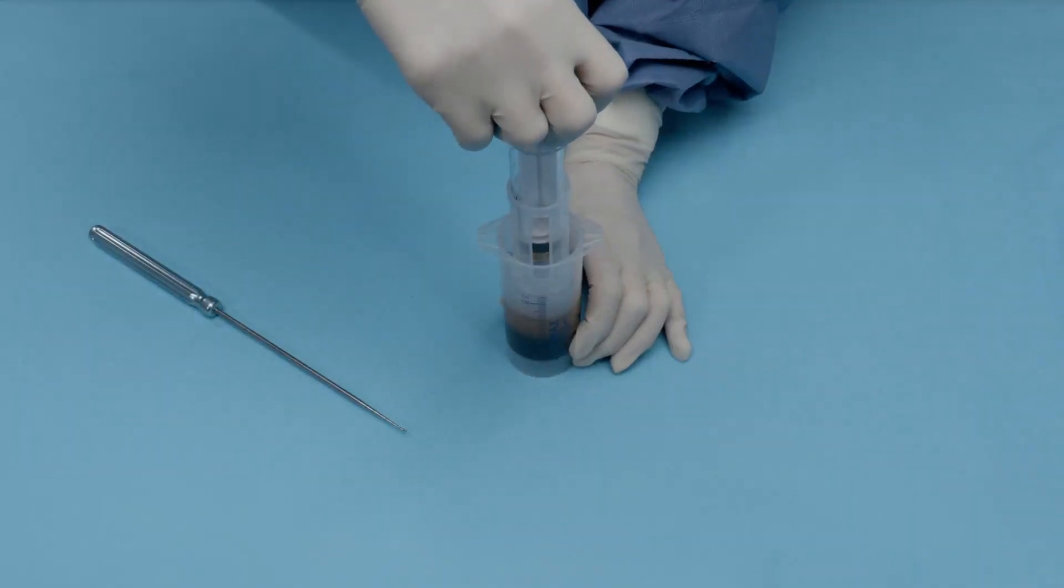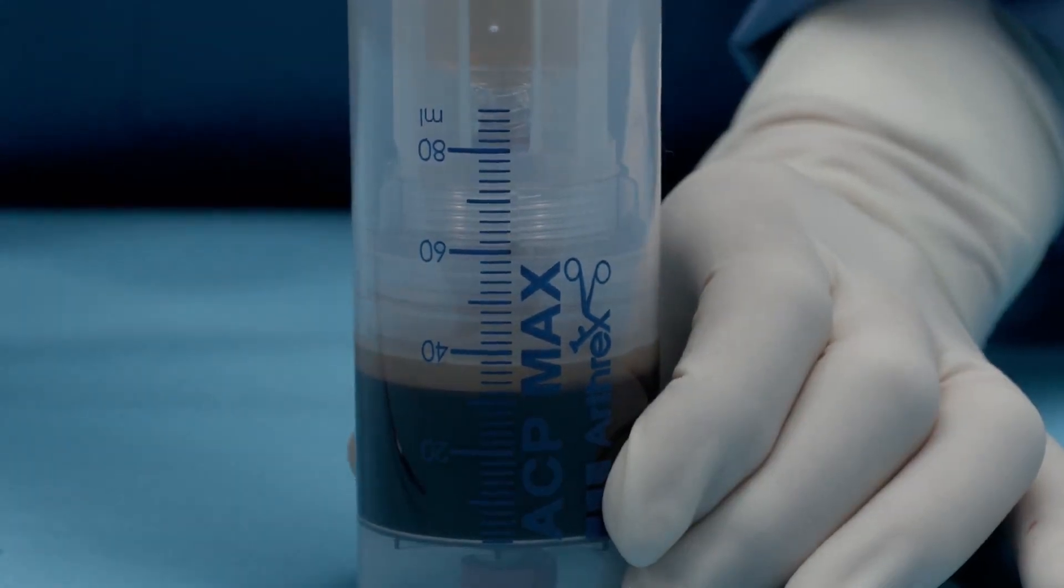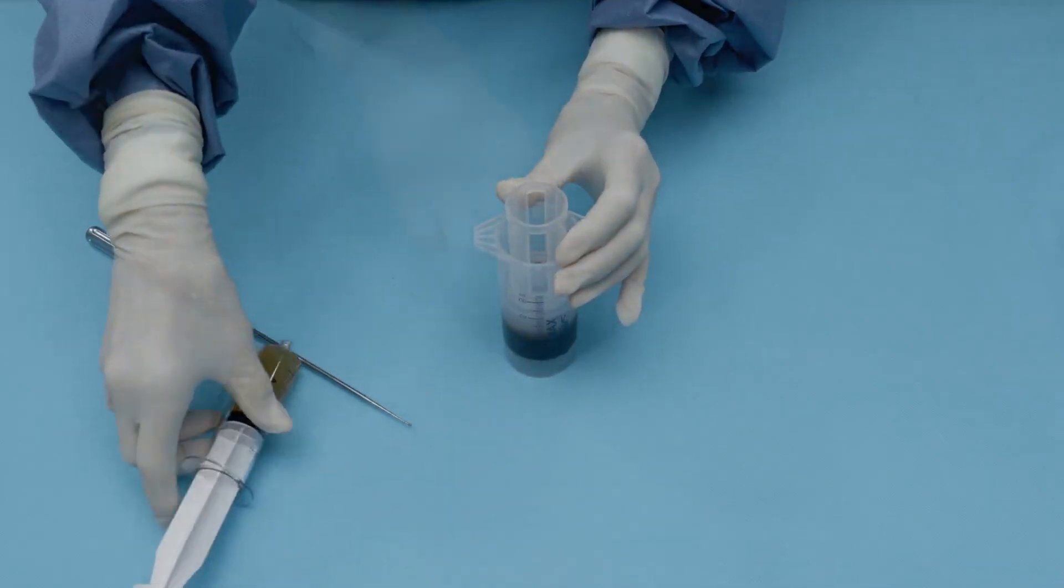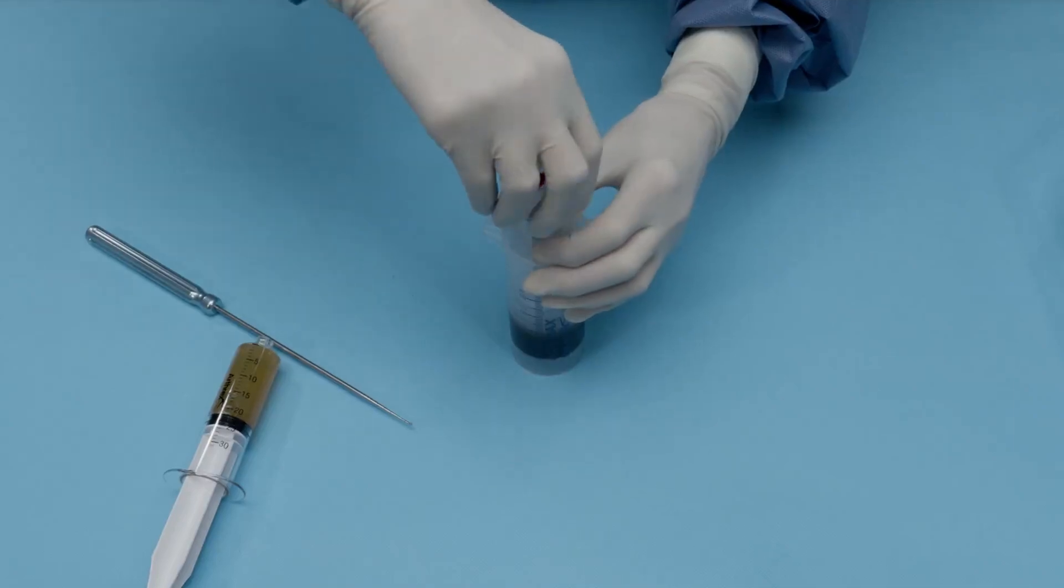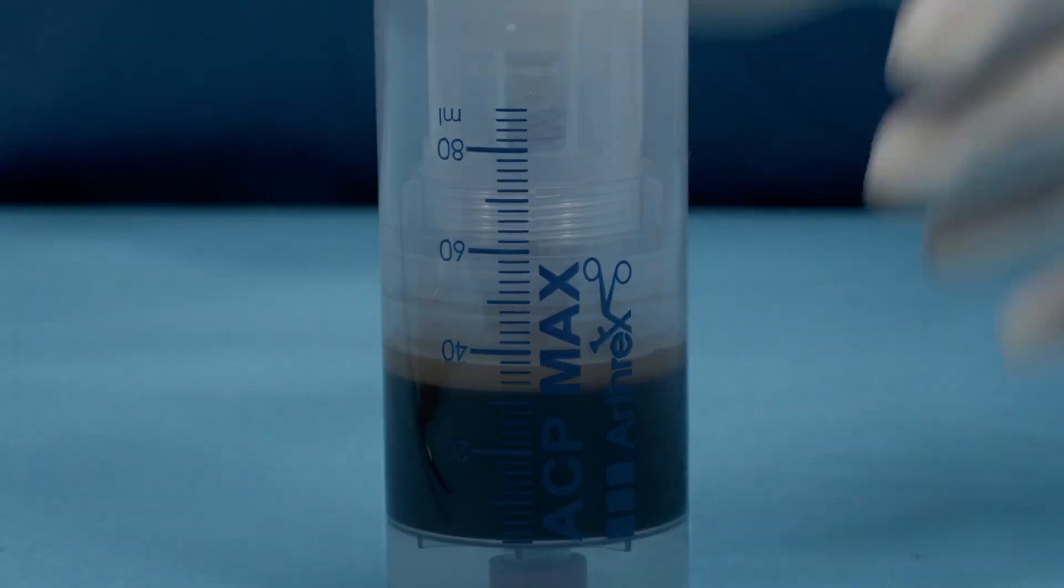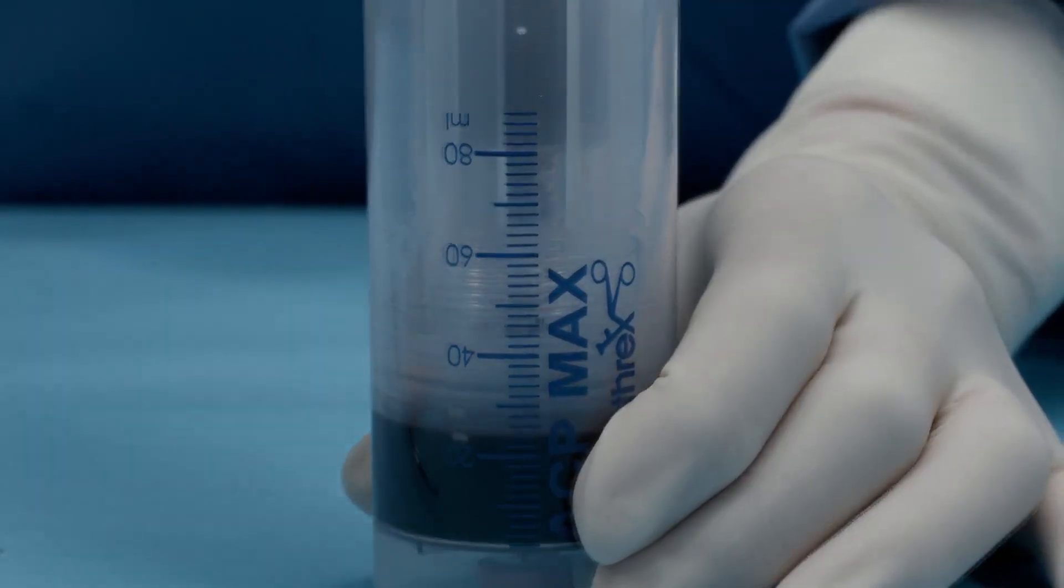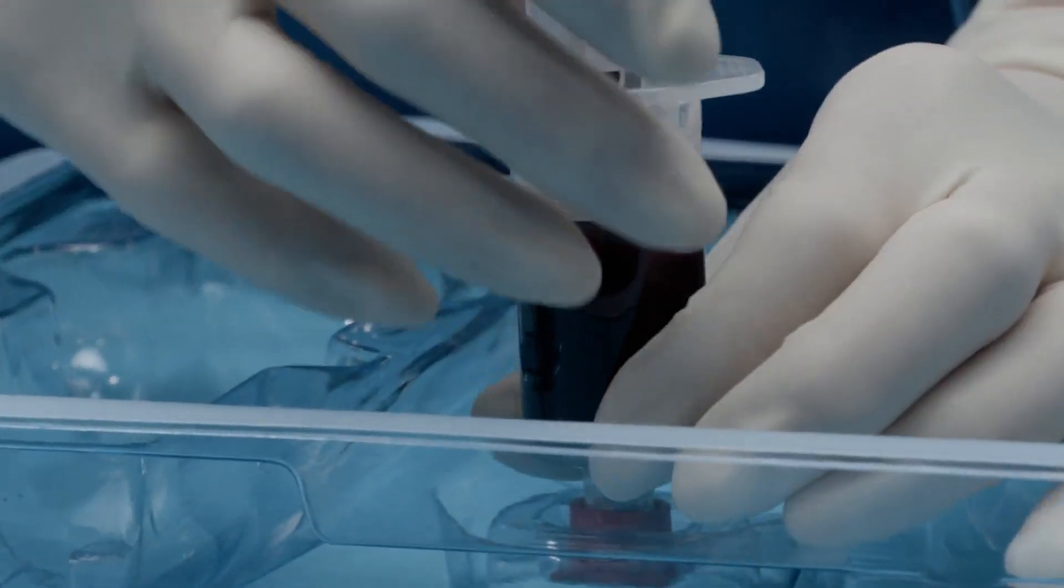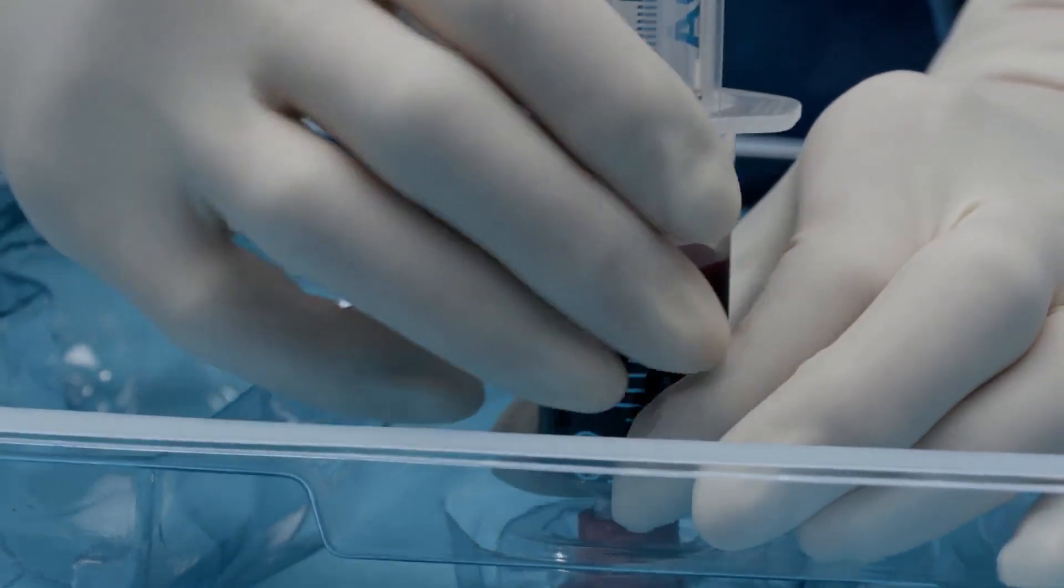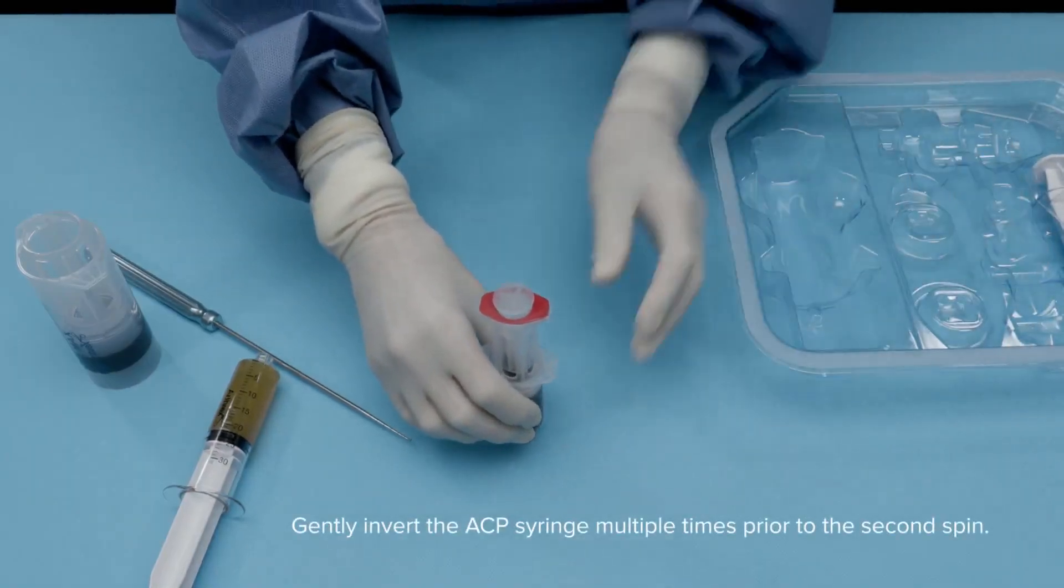We're going to pull off platelet poor plasma until we're at two ticks above the level of our Buffy coat. We then remove our platelet poor plasma, and we place our double barrel ACP syringe onto the needleless lure valve, and we withdraw 15 cc's of product. We then remove the Buffy coat product, and we place the lure cap onto the product. And now we're ready for our second spin.